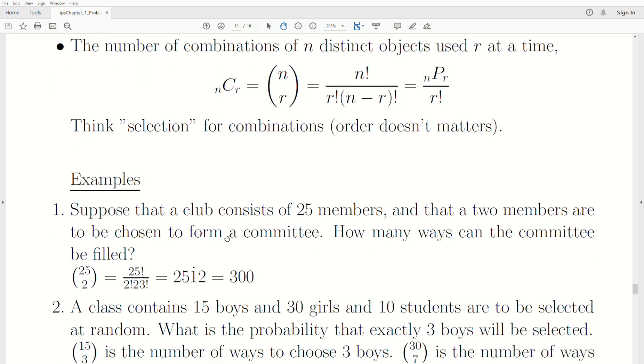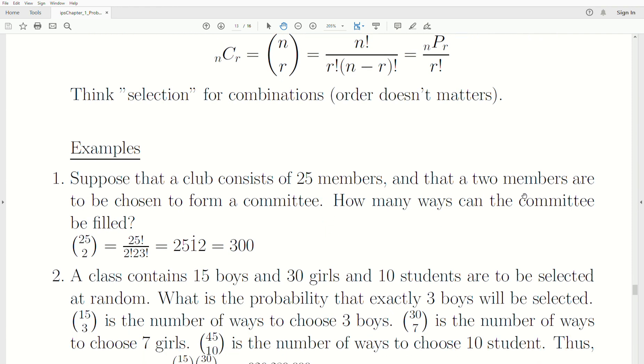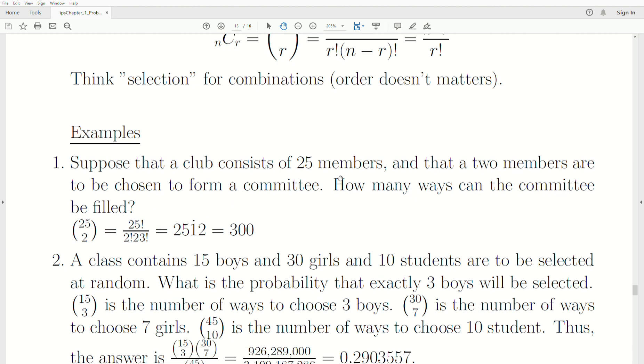Suppose that a club consists of 25 members, and that two members are to be chosen to form a committee. How many ways can the committee be filled? Notice that it's a committee of two. So if we pick two people, say John and then Sally, they're on the committee. If we would have picked Sally then John, it's still the same committee. So the order that we picked the two does not matter. So this is combinations.